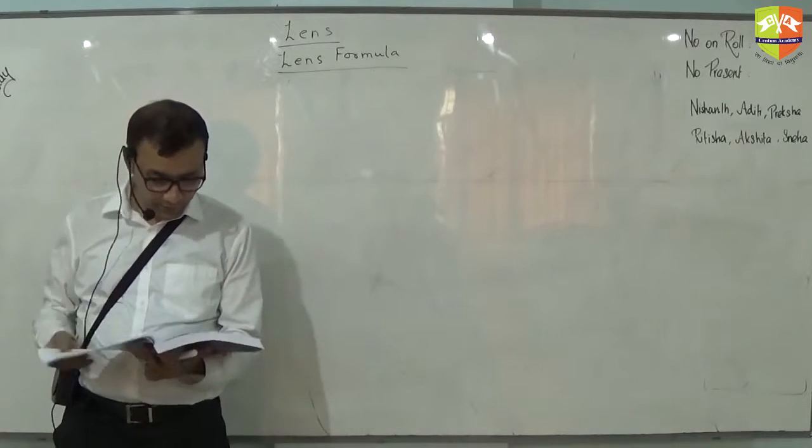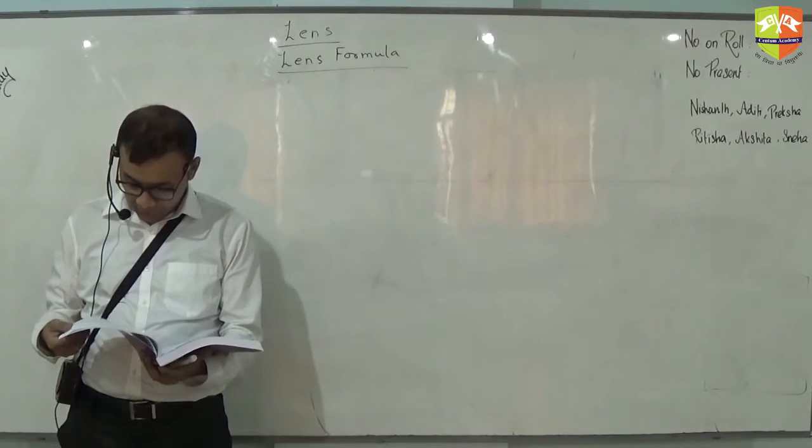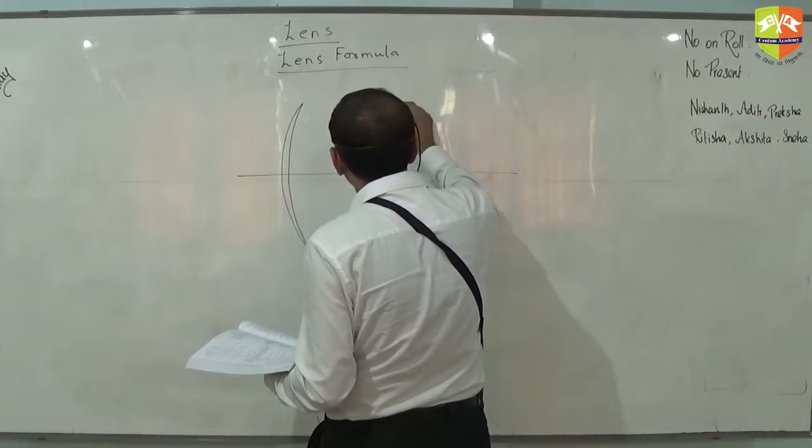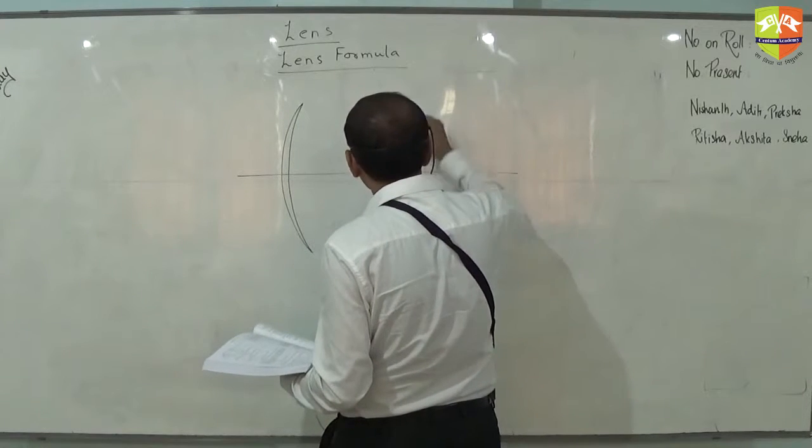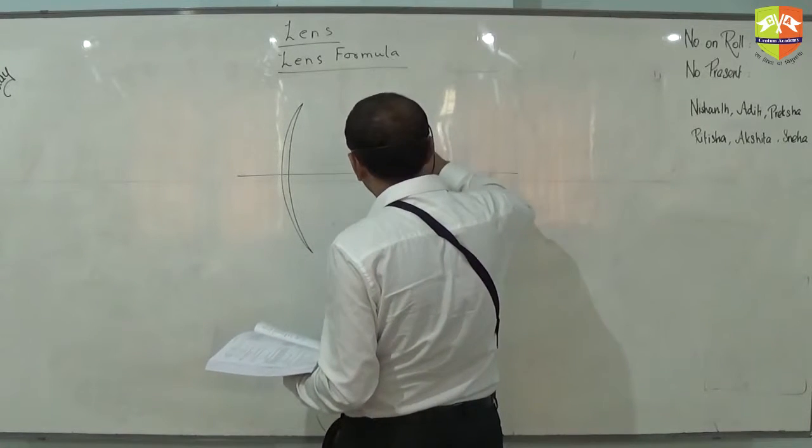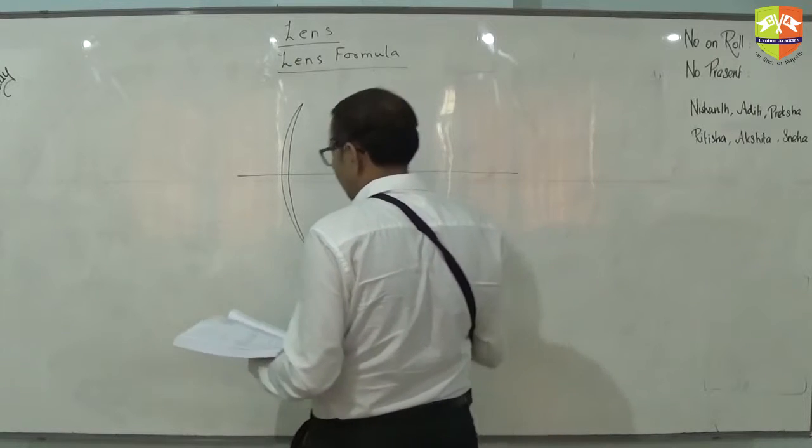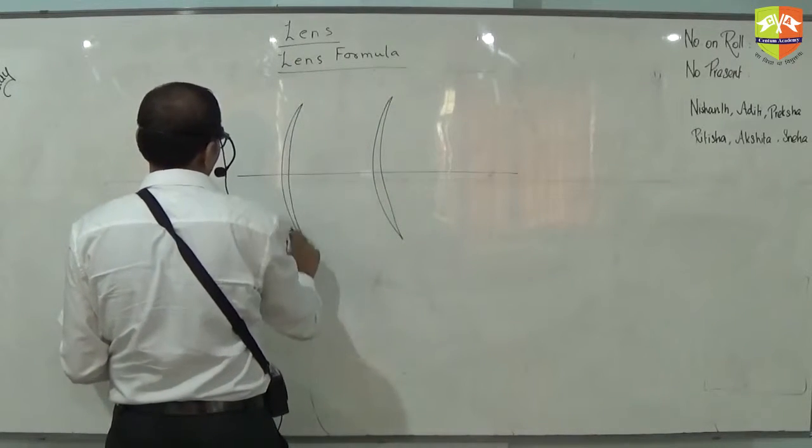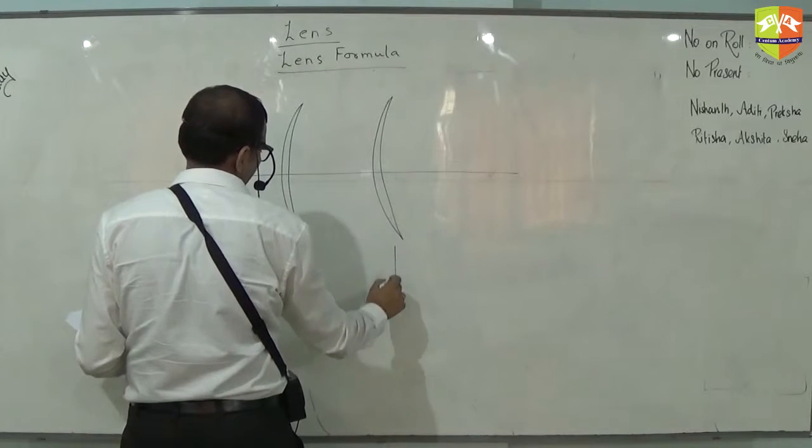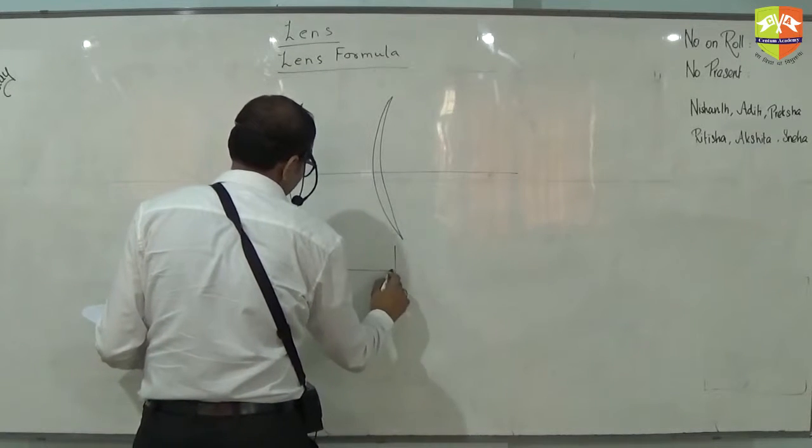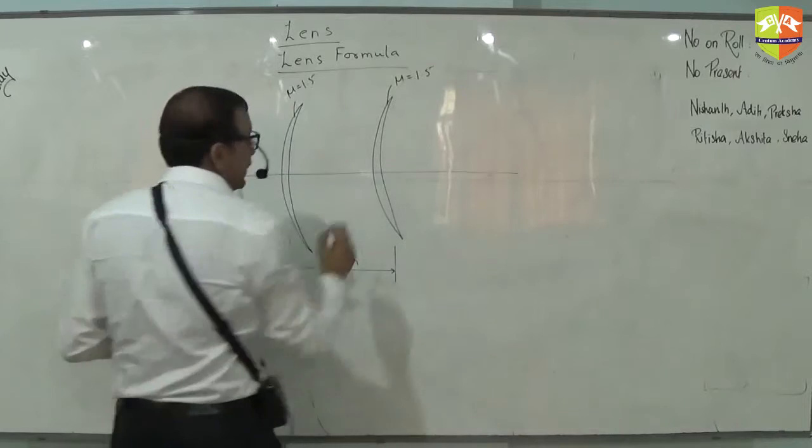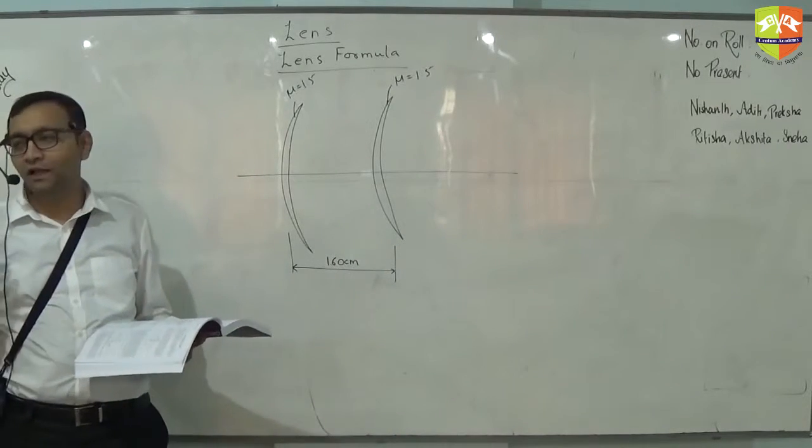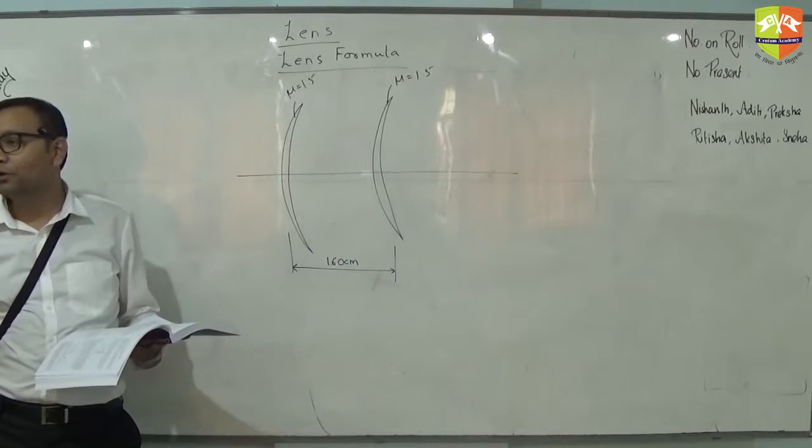So let us take up the next question. First draw this figure. We are actually doing one of the few most difficult questions from this chapter. You can see that the difficulty level of the most difficult question is not very high, so it's a very scoring chapter. Do it properly. In fact, this entire chapter is all about sign convention. Once you get your sign convention right, you will be able to solve any question.